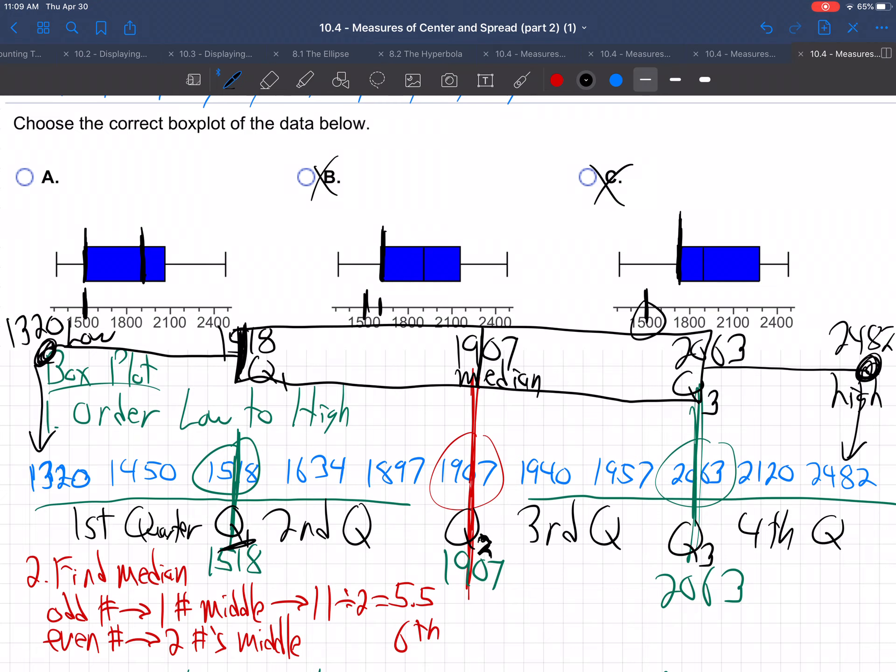The middle is supposed to be 1907. Yeah, that looks like right around 1900. The right edge, 2063. Right here, yeah, that's almost to 2100. The upper part is past 2400. Yeah, the upper is supposed to be 2482. The lowest part, 1320. Yeah, that looks like that's hitting just above 1300. There it is. That's the right box plot, breaking the data into those four sections. That's what a box plot does. It divides all your data into four equal sections using the middle of the whole data, and then the middle of the lower half and the middle of the upper half.